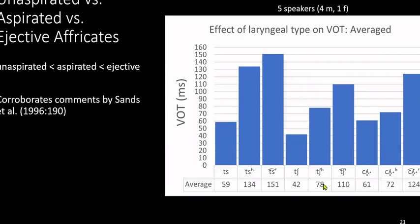Including the ejective affricates, we find the same pattern as for the stops: the unaspirated has the shortest VOT, the aspirated has the intermediate VOT, and the ejective has the longest VOT for the affricates. This corroborates comments made by Sands et al. in 1996, where they found the same pattern in their study. The bar graph clearly shows the ejective has the longest VOT compared to the aspirated and unaspirated counterparts.